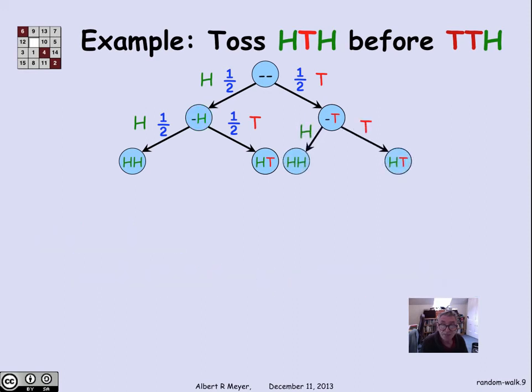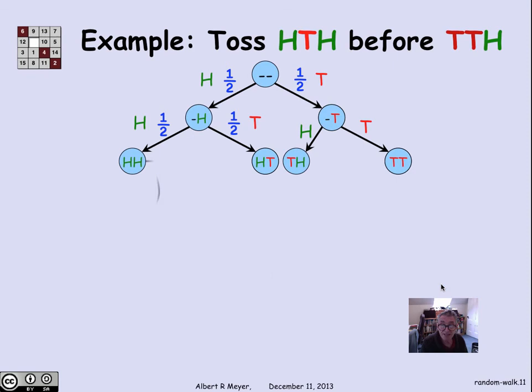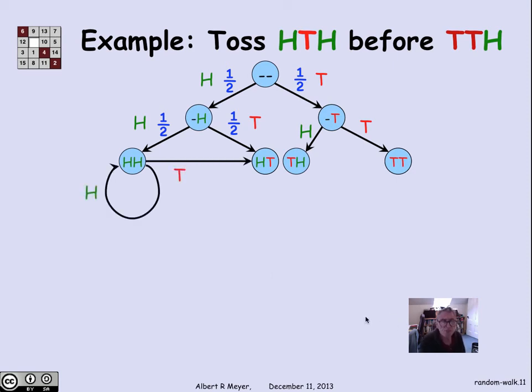Let's continue and do another example. So likewise, if I expand what happens after I flip a T or an H after having flipped the first head, I get a corresponding equation that the probability of winning after a single tail is the same as half the probability of winning with a tail followed by an H or a tail followed by a tail.